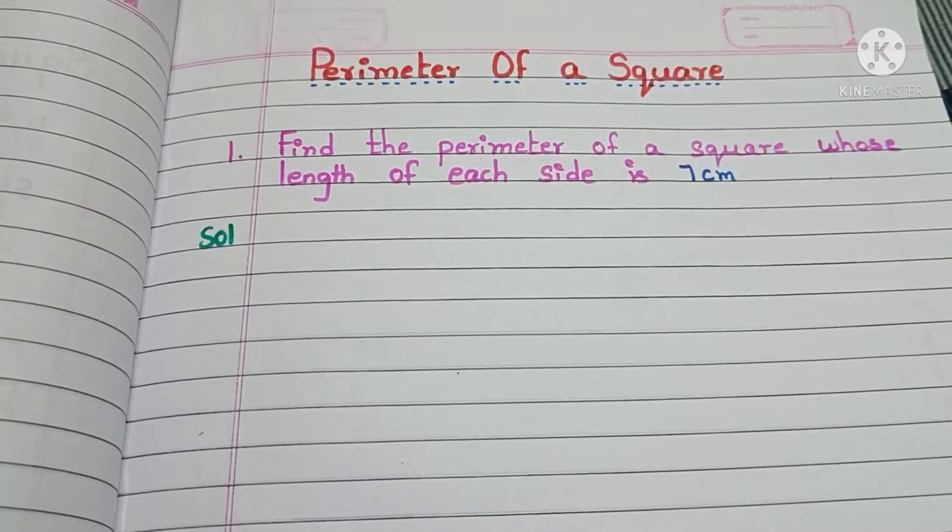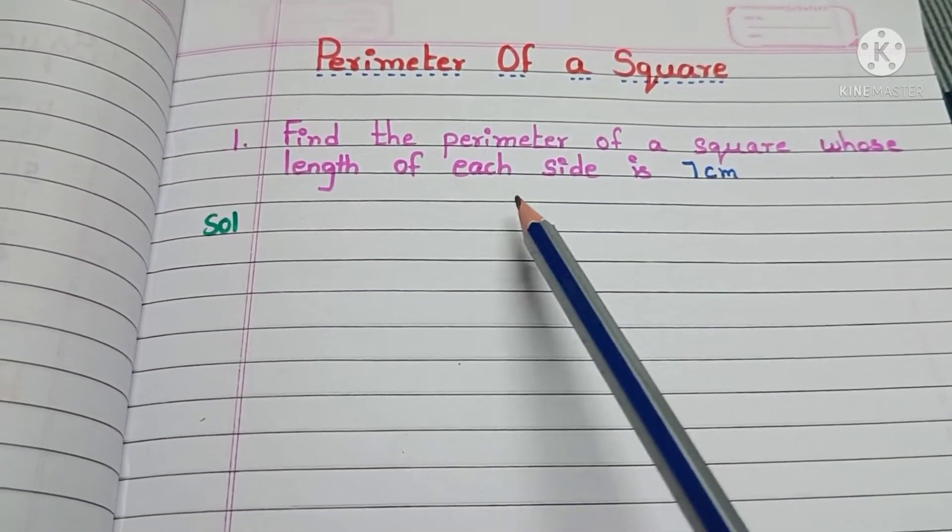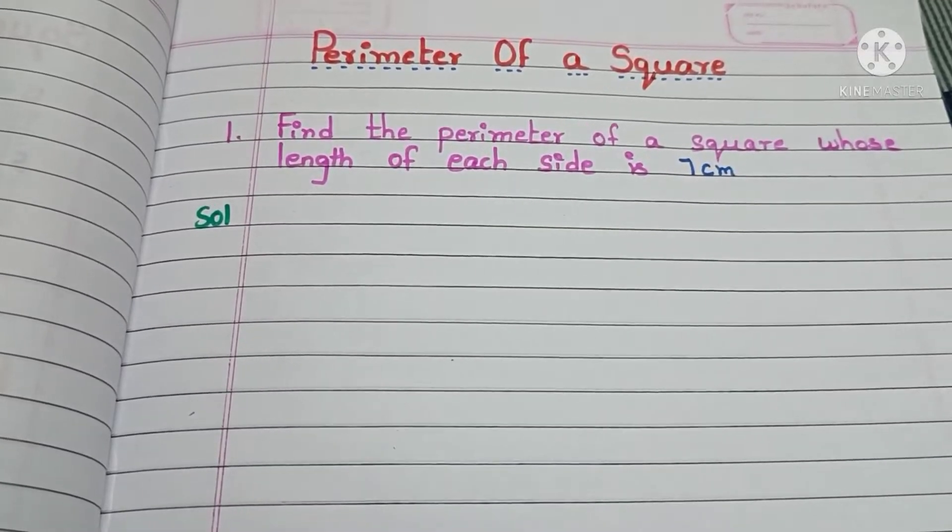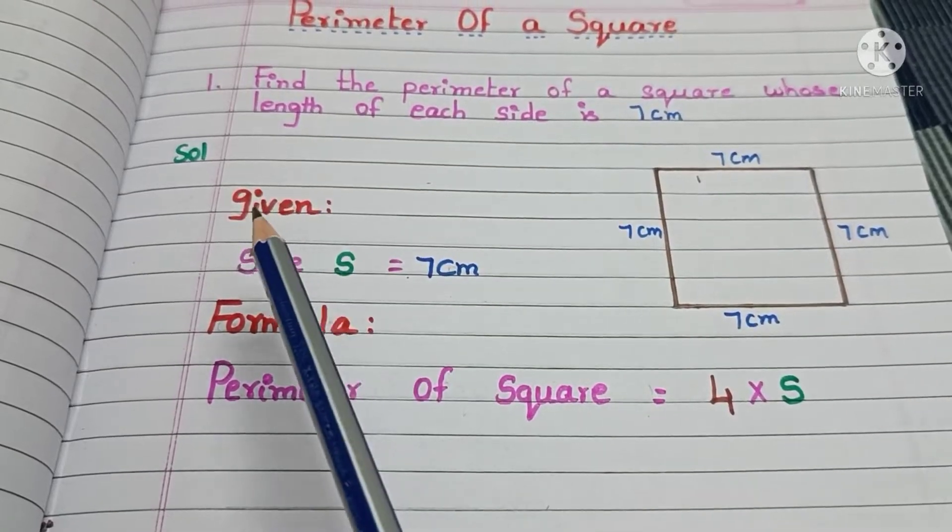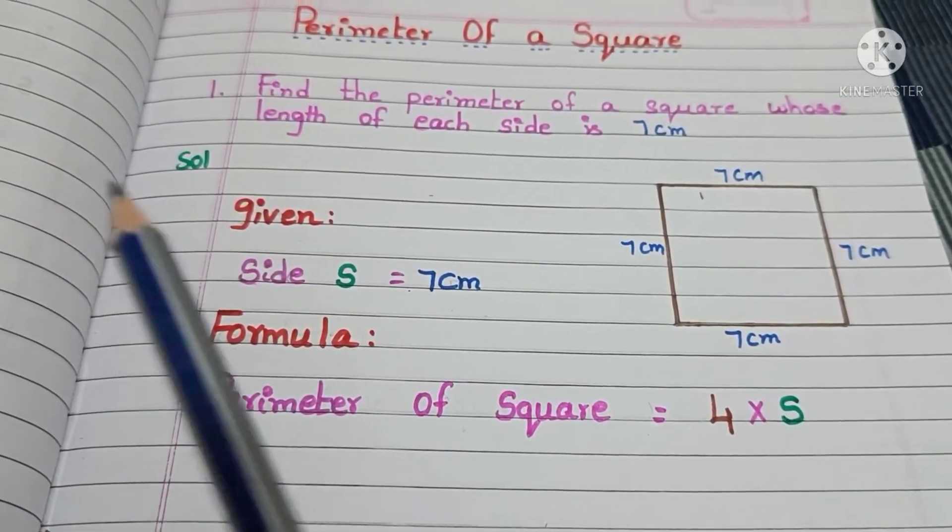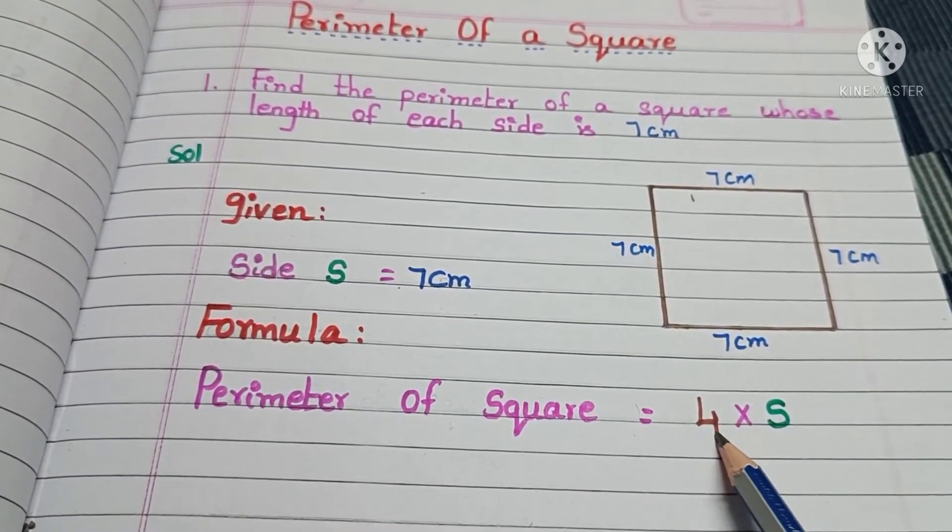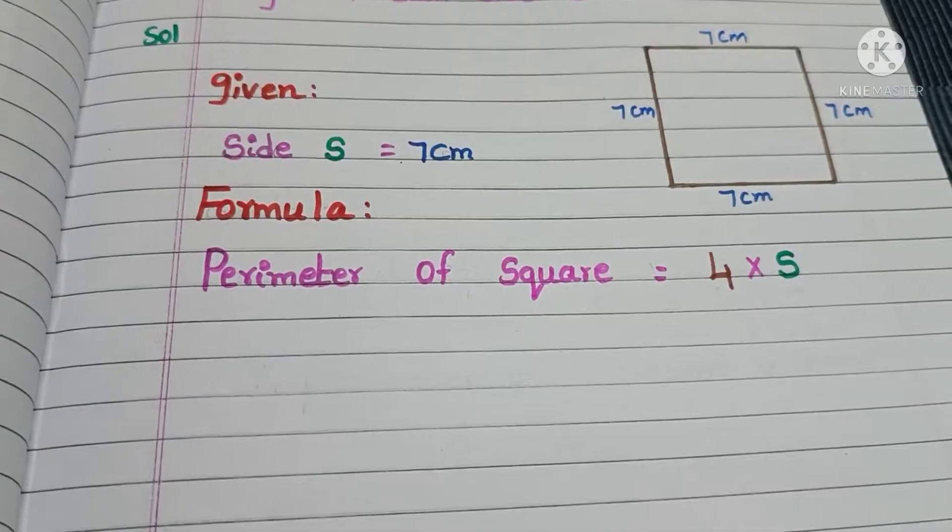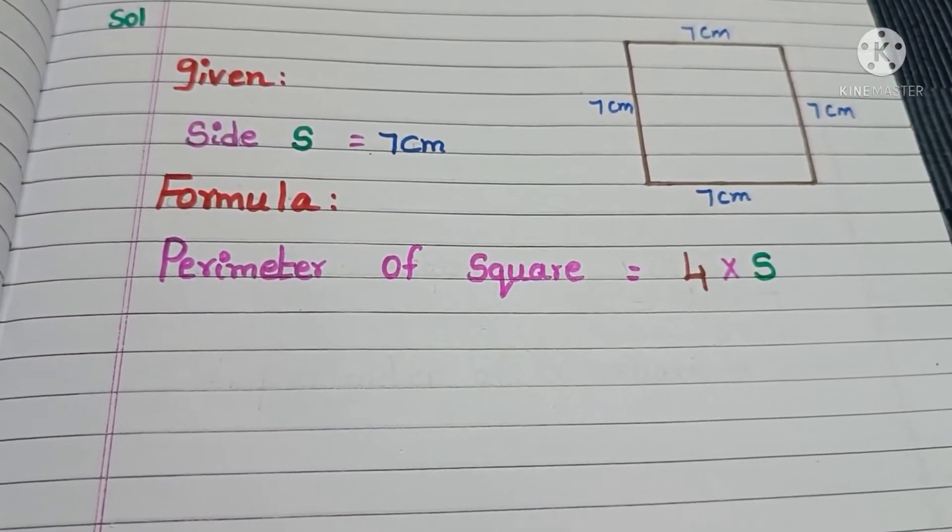Our first question is, find the perimeter of a square whose length of each side is 7 cm. Now, let us see the solution. Here, given the side S is 7 cm and the formula to find the perimeter of a square is 4 times S. Now, substitute the value of side in the formula.